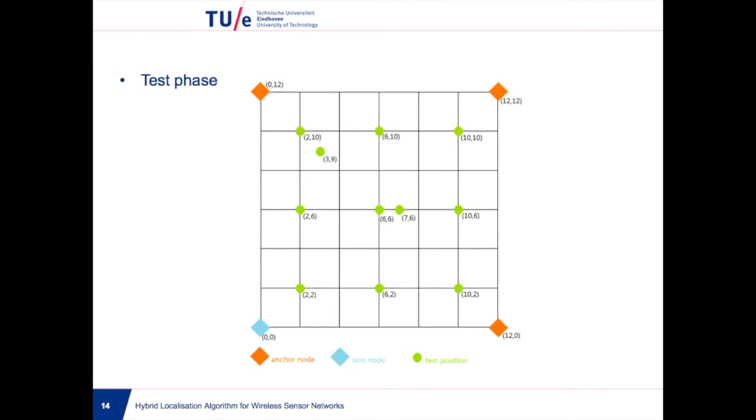To test our proposed algorithm, we place the mobile node at 11 different positions within the 12 by 12 grid. The accuracy of the calculated position versus the actual position is discussed in the performance evaluation section. Next, we are going to show a short clip demonstrating how the algorithm works.